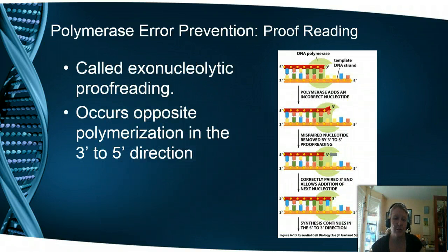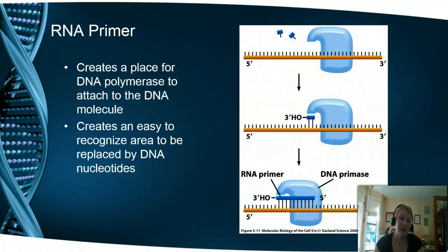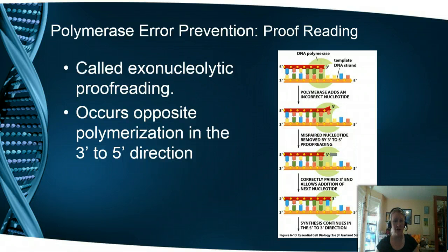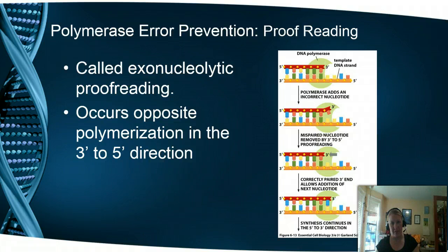If the mismatch isn't caught, there's a second process called exonucleolytic proofreading. This occurs at a second site on the polymerase III enzyme. If a base pair mismatch isn't caught by the first mechanism, there's a kink in the DNA sequence that stops polymerase from moving forward. The second catalytic site then moves in the opposite direction and removes the incorrect base, replacing it with the appropriate one, allowing polymerase to continue forward. This second active site is separate from the one actively adding base pairs. These two mechanisms combined — base pair mismatch detection and proofreading — help ensure that DNA has very few errors during replication.